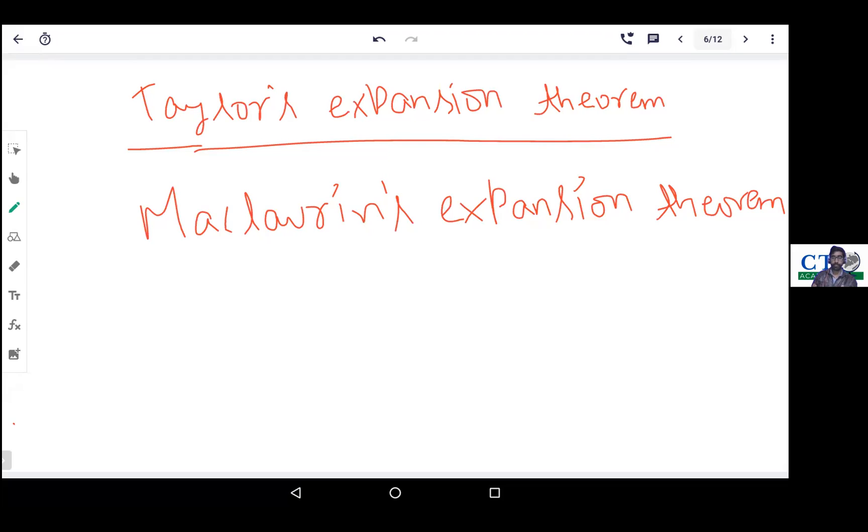We are going to start the series with expansion theorems. Today we will do Taylor's expansion theorem and Maclaurin's expansion theorem. We will not see its proof - if you want to see the proof, please write in the comment section and we will provide it. We'll cover what these theorems are and how they are used in expanding certain identities like sin(x), cos(x), e to the power x, or logarithmic x.